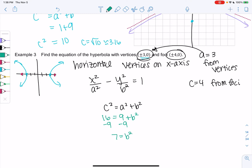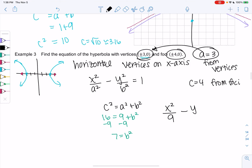And so we don't really care that it's the square root of 7 because we're going to plug in b squared. So my equation will be x squared over 9 for 3 squared minus y squared over 7 equals 1. And that is my equation of a hyperbola.